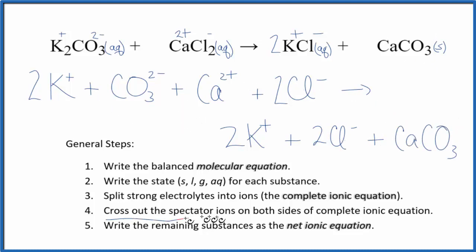Now we can cross out spectator ions. These appear on both sides of our complete ionic equation. So in the reactants, I have 2 potassium ions here. And then in the products, 2 potassium ions. I'm just going to cross those out. I have 2 chloride ions here. And then in the products, 2 of those. Cross them out.